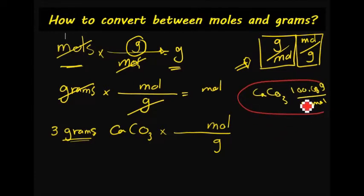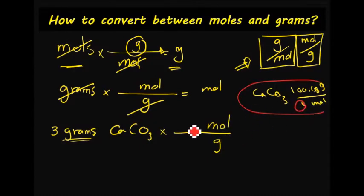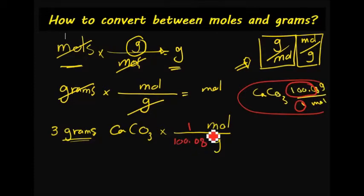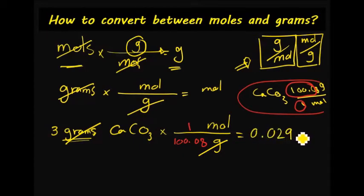So I put 1 on the numerator and 100.08 on the denominator. Grams will cancel out, and that gives me 0.029976 moles of calcium carbonate.